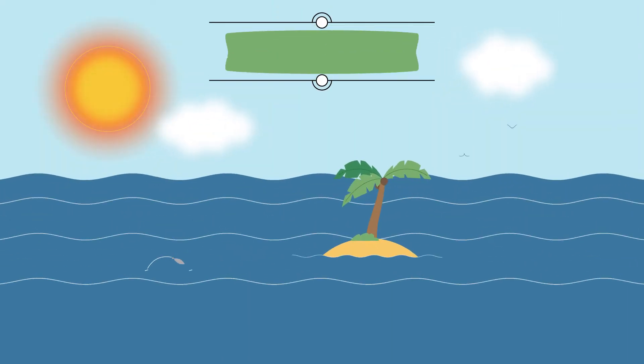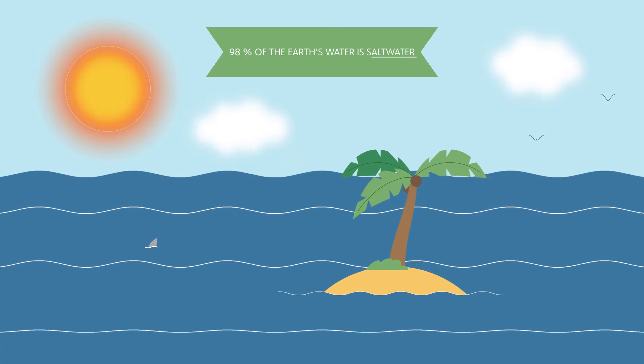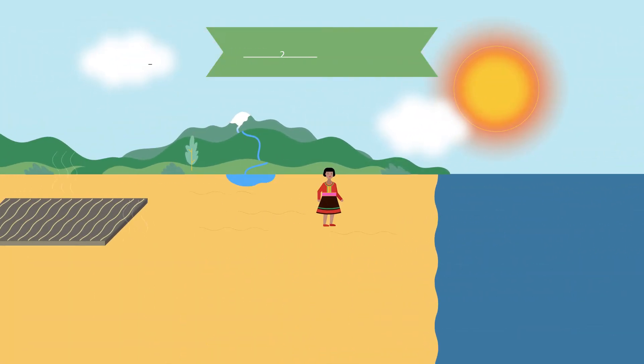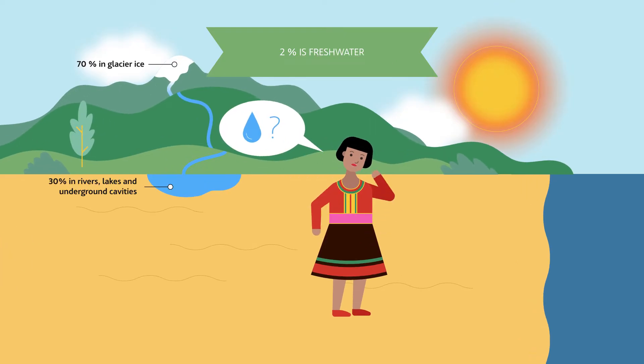98% of the Earth's water is salt water, found in seas and oceans. The other 2% is fresh water, for use by homes, farms and industry.